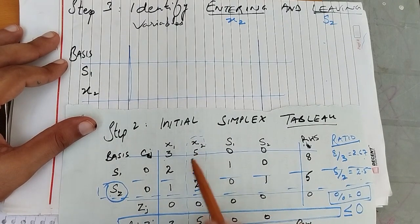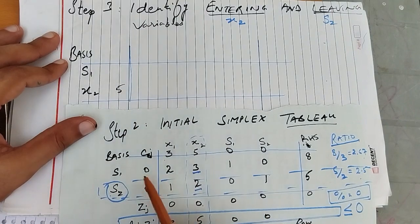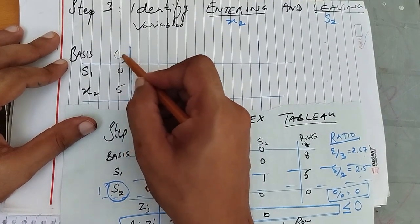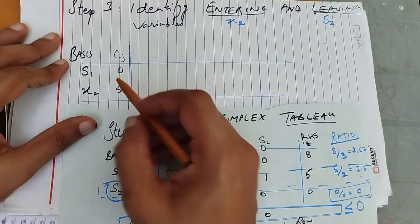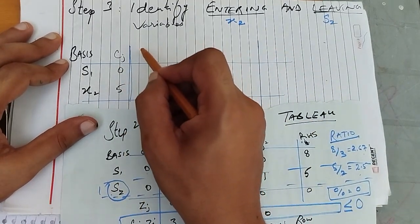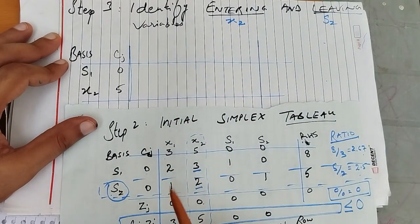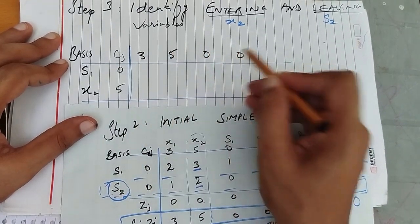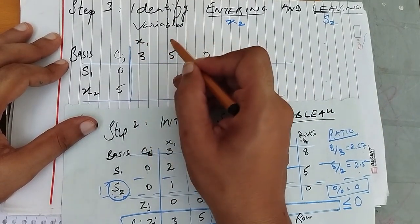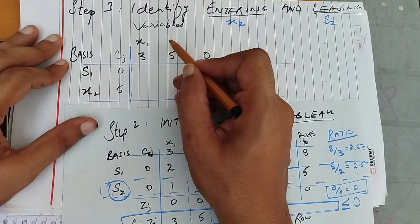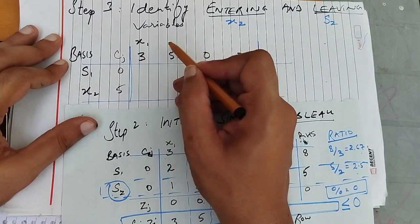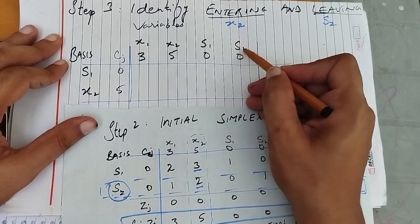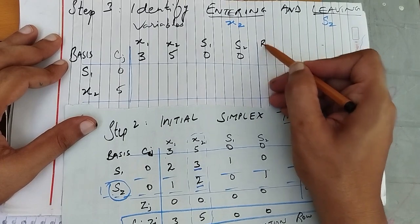What is the x2 coefficient? The x2 coefficient is 5. S1's coefficient was 0. These are the coefficients of the objective function. The objective function coefficients were 3, 5, 0, 0 — where x1 has coefficient 3, x2 has coefficient 5, s1 has coefficient 0, and s2 has coefficient 0.